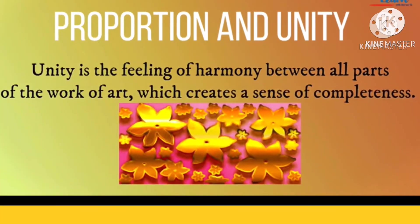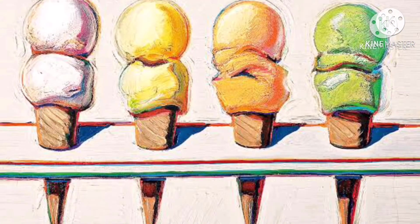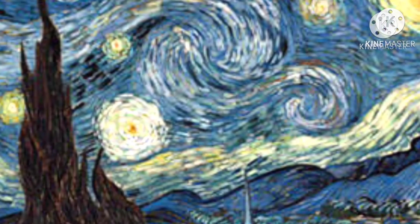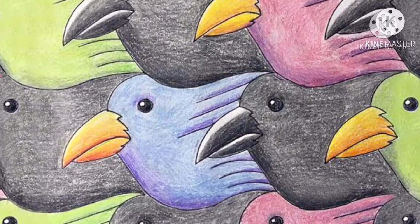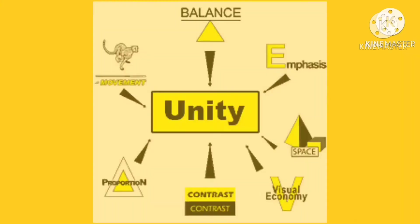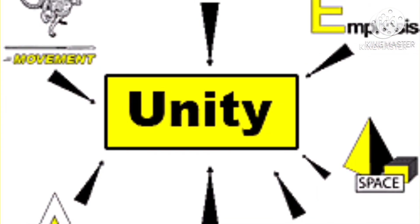Proportion and unity in art describe how elements are combined to create balance and harmony. To achieve unity in art, there must be balance and harmony with the seven elements of art. Unity can be achieved through repetition and simplicity. Unity is like a visible clue — it tells the viewer that the pieces belong together. Examples of unity include shape, pattern, and contrast.